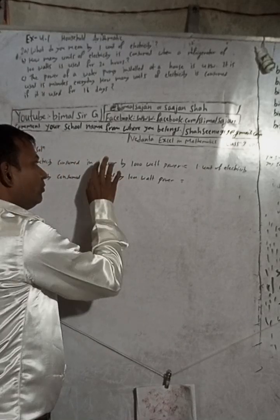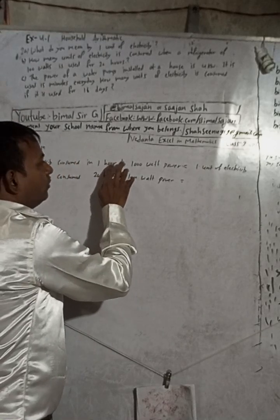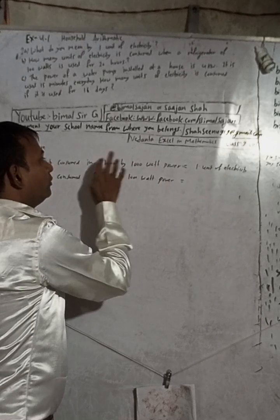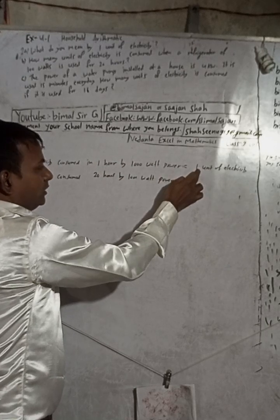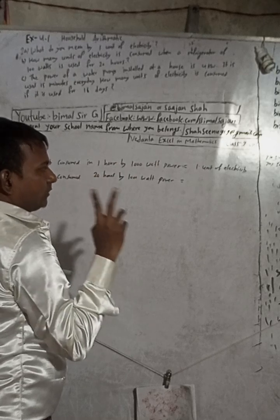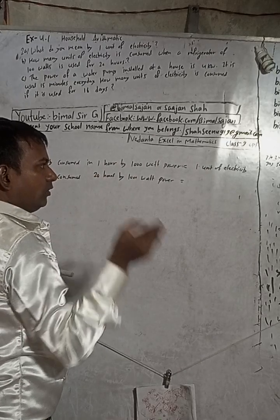In one hour by this much is equal to... Suppose this is unitary method. If there is one hour, then one unit. So now our time increases to 20 hours, so this must also be increased. So there are two conditions: either you can divide or multiply.